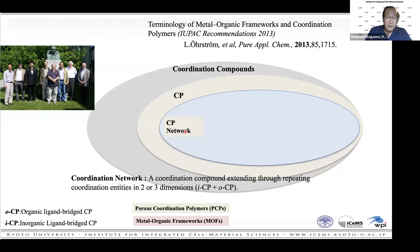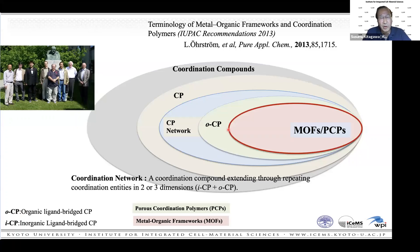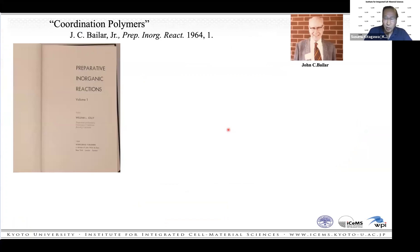If the extended structure has two or three dimensions, we call it a coordination network. Historically, the first coordination networks used inorganic ligands — such as cyanide, halides, and oxides — to make extended structures. After that, organic molecules were used, forming organic coordination polymers, OCPs. Among OCPs, if the system has potential voids or pores, we call them PCPs.